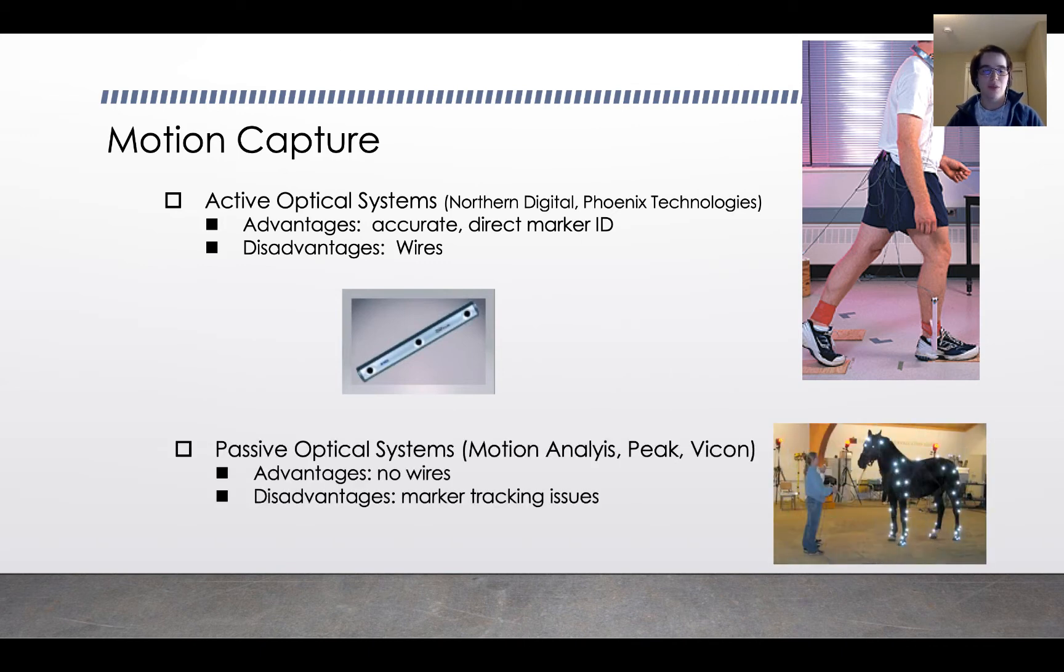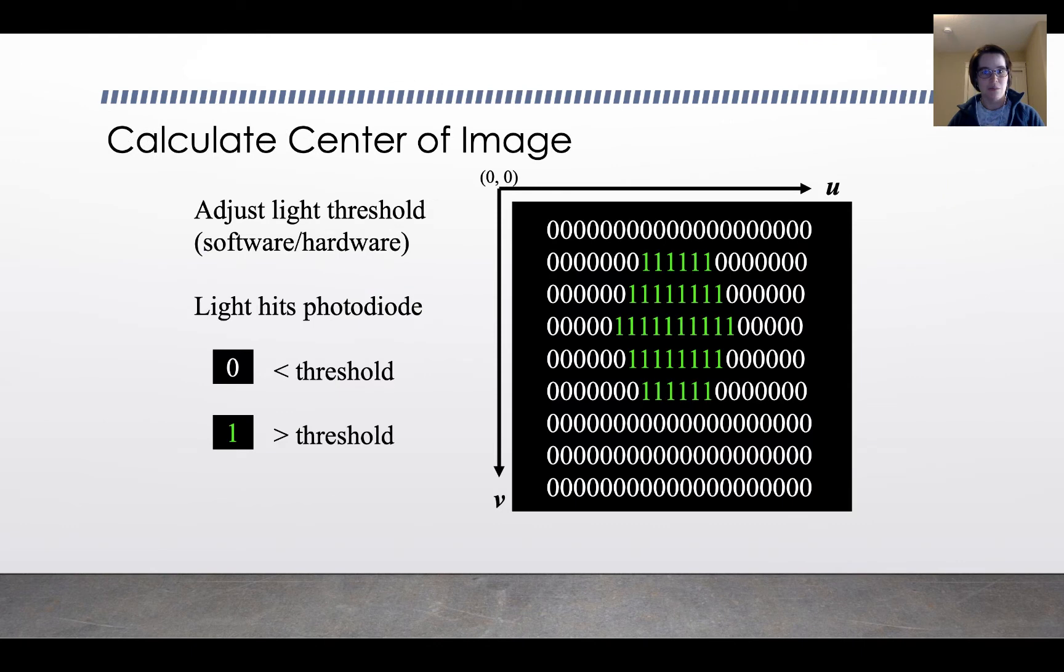When you're using a passive system like the one in the picture here on the horse, the advantage is that there are no wires. The markers aren't connected to anything. The disadvantage is that you don't know which marker is which, which can sometimes lead to problems. What the computer is doing when you have a passive system is it's saying, is there reflected light here or is there not reflected light here? Where there's reflected light, it interprets that as a one, greater than some threshold. Where there's not reflected light, it interprets that as a zero.